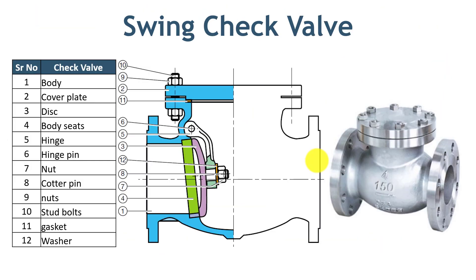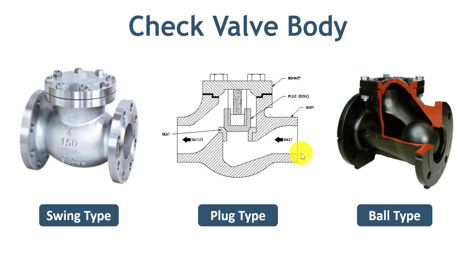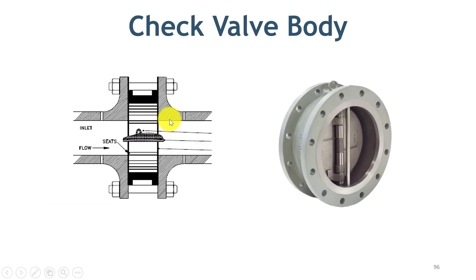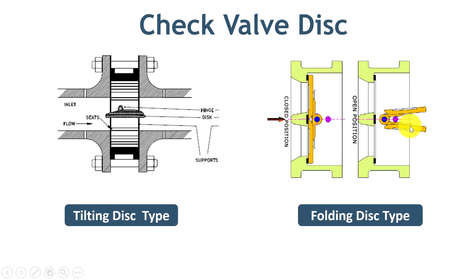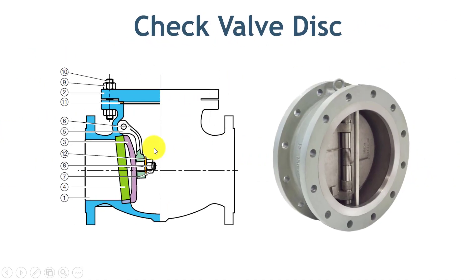Now let's quickly look at other parts of the check valve. You can observe that the body of the swing type, plug type, and ball type check valve is globular in shape. Whereas in the case of the dual plate and tilting disc check valve, it is a short cylindrical shape that resembles the body of a butterfly valve. In the check valve, the disc can be a single plate, such as in the swing type and tilting disc type. In the case of the folding type, the disc comes in two pieces. The shape of the disc in a ball and plug check valve is self-explanatory.